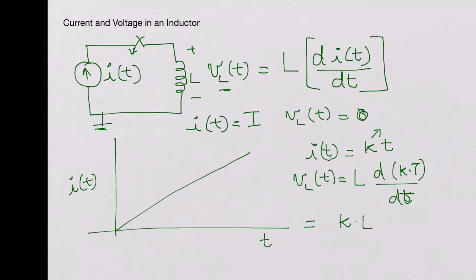What it means is if there is a current that's forced into the inductor which is increasing in time like this, you would have a constant voltage that is developed across the inductor, and that voltage is k times L—a DC voltage.